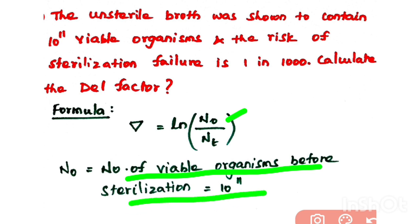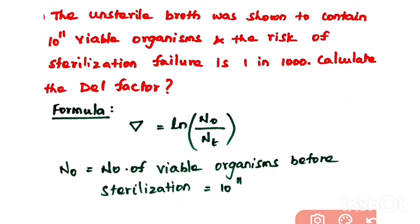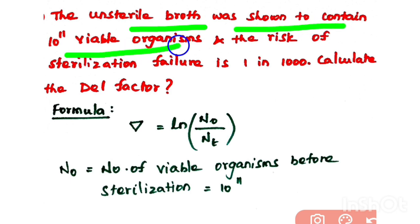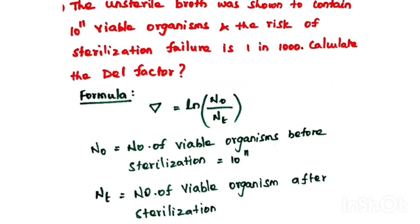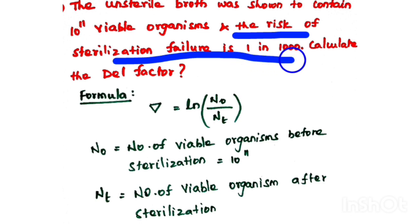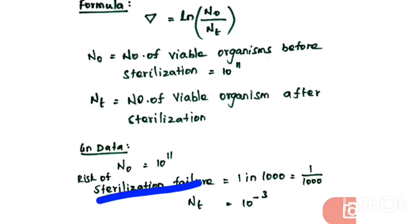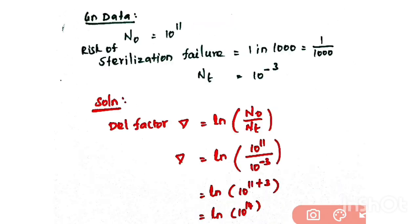In the given data, the unsterile broth — that is, the broth before sterilization — contains 10^11 viable organisms, so N0 = 10^11. Nt is the number of viable organisms after sterilization. They have not given this directly; instead, the risk of sterilization failure is one in a thousand, which is 1/1000. So Nt = 10^-3.